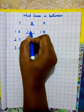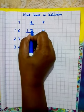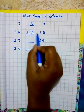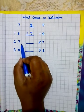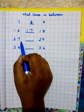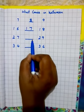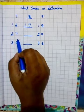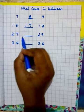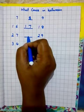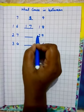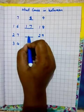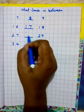So 17 is in between 16 and 18. Next numbers are 27 and 29. What comes after 27? 28. And what comes before 29? That is also 28.